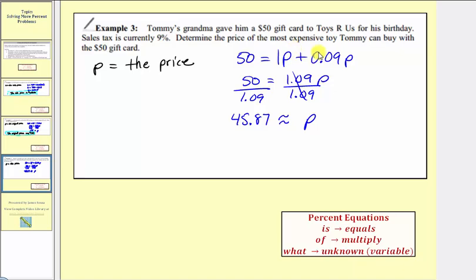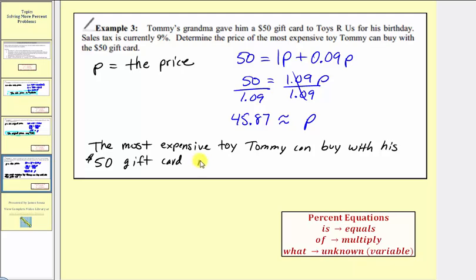Which means the most expensive toy Tommy can buy with his $50 gift card is $45.87. This is the most expensive toy he can purchase, that when the tax is added, he can still pay for the entire gift with his $50 gift card.